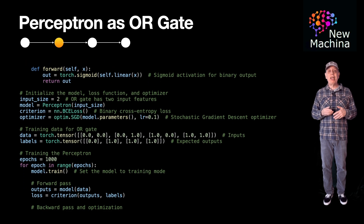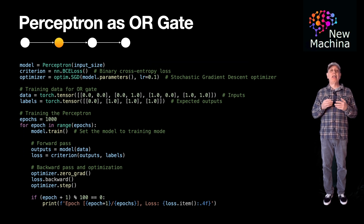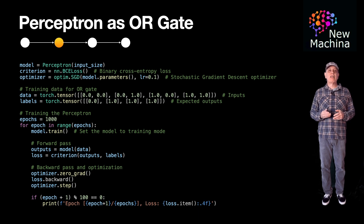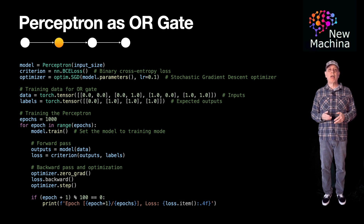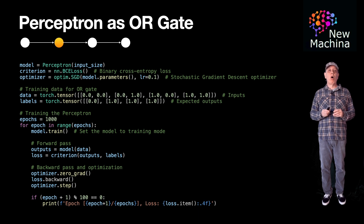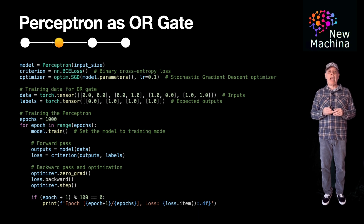Next, I will train the model using the training data and the labels. I define the epochs, which is the maximum number of training iterations to perform in this loop. The first step in this training loop is to set the model into training mode. Next, I perform a forward pass on the model with the training data, then I calculate the loss by passing the expected results in the form of the label. Then we perform a backward pass, which executes an incremental optimization of the weights and biases. Every 100th epoch iteration, we print out the epoch counter and the loss value, and with each training iteration the loss becomes smaller and smaller.